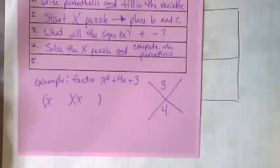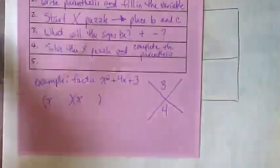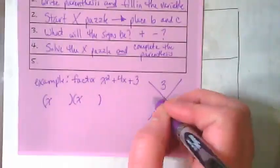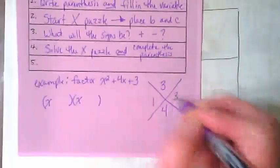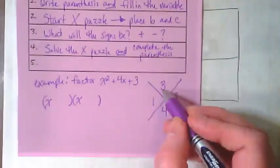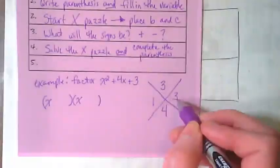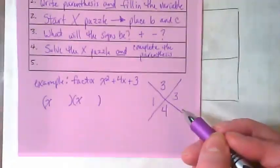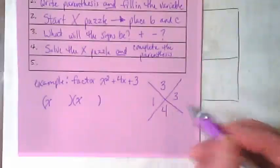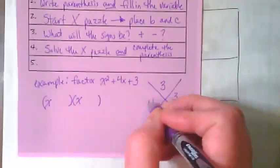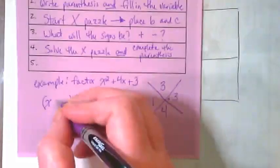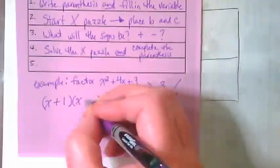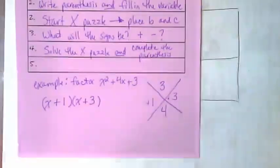What numbers are going to complete our x puzzle? One and three. When I multiply one and three I get three. When I add one and three I get four. Does it matter which order? It doesn't. We know that they are both positive, so to complete our puzzle or our parentheses we're going to do this.